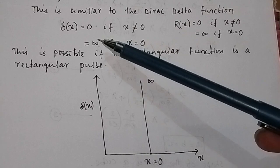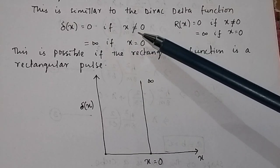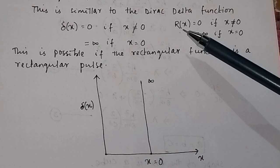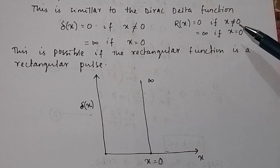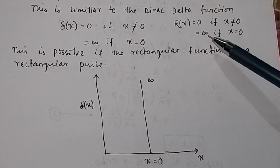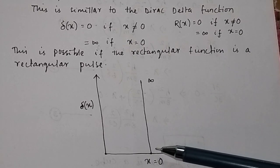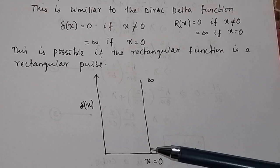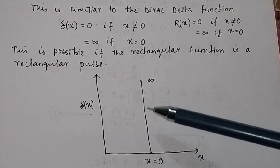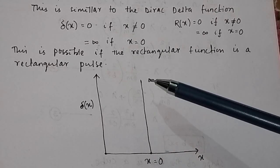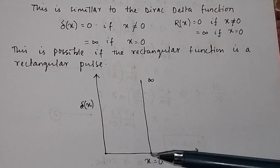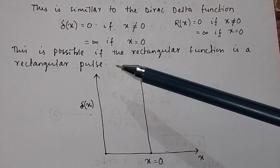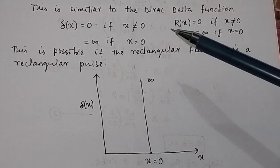As defined for the Dirac delta function, delta(x) equals 0 if x is not equal to 0 and delta(x) equals infinity if x equals 0. Similarly, in the case of the rectangular function, R(x) equals 0 if x is not equal to 0 and R(x) equals infinity if x equals 0. This is possible when the rectangular function is a rectangular pulse. Here at x equals 0, the rectangular pulse is infinite. Though practically not possible, theoretically R(x) equals infinity at x equals 0. This rectangular function becomes a pulse — a rectangular pulse — when it turns into the Dirac delta function.